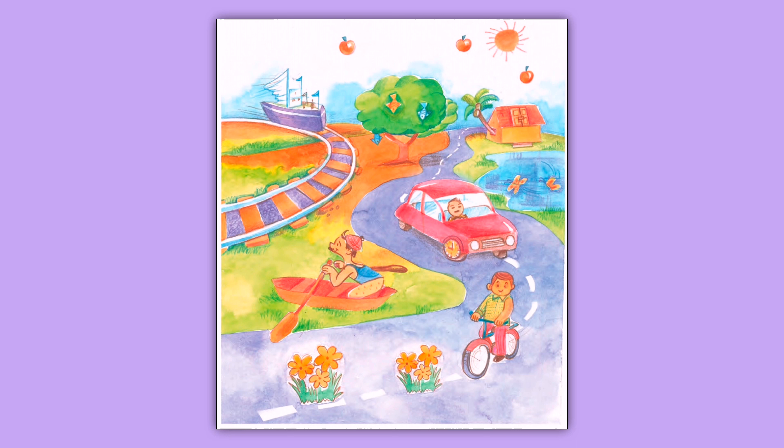Next is a ship sailing on a railway track. Picture में railway track दिखाया गया है। जैसा कि आप सब लोग जानते हैं, railway track पर train चलती है। लेकिन इस funny picture में railway track पर एक ship को sail करते दिखाया गया है। So this is the fifth funny thing we can see in this picture.